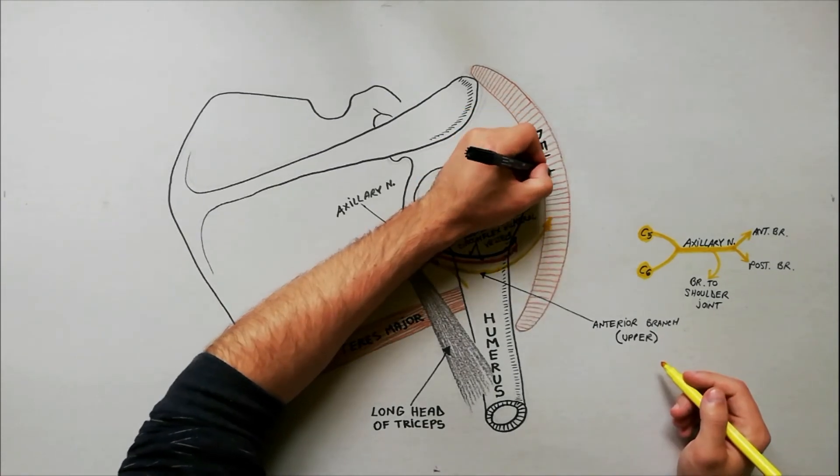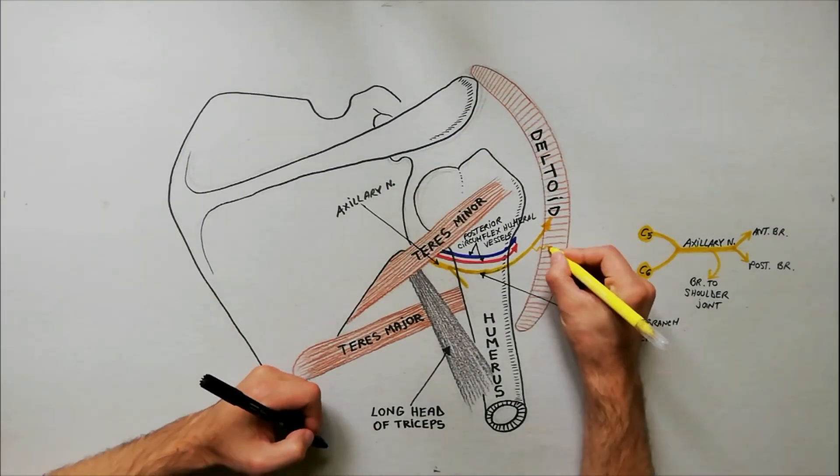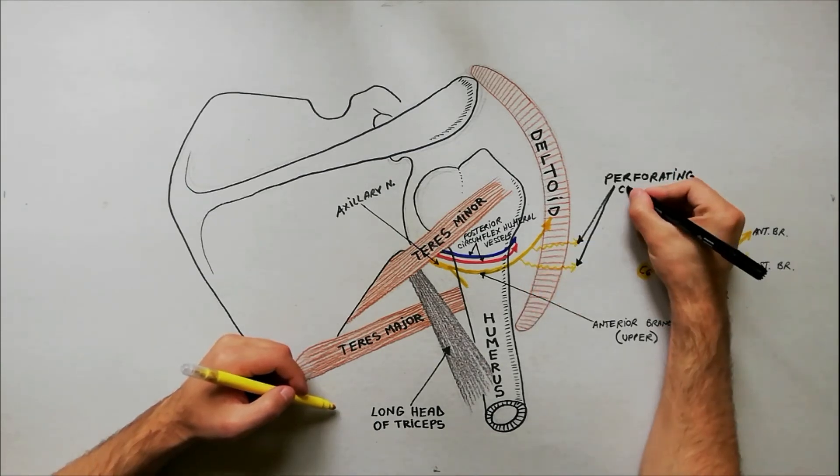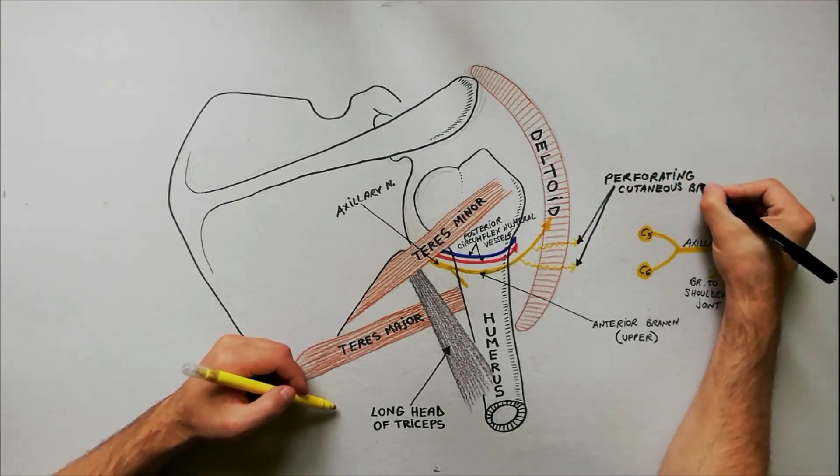This branch supplies the deltoid muscle and also gives off a few small cutaneous branches, which pierce the muscle and supply the overlying skin.